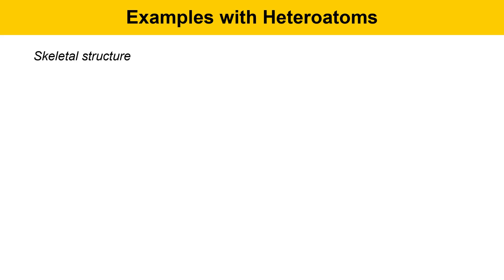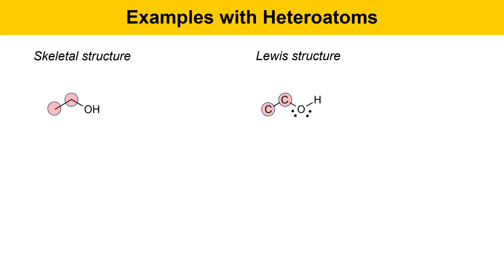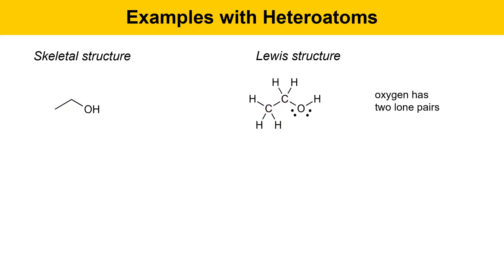We're going to take skeletal structures and convert them into Lewis structures. Here's an example of a skeletal structure of ethanol, also known as ethyl alcohol. It has two carbons indicated by the kink in the structure in the middle and the unlabeled line on the left. In Lewis structure format, the carbons are drawn in. Also, don't forget about the two lone pairs of electrons present on oxygen. When dealing with oxygen, nitrogen, or some other heteroatom, realize that these atoms may have lone pairs of electrons that won't be drawn in the skeletal structure. The left carbon has three hydrogens, and the middle carbon has two hydrogens.